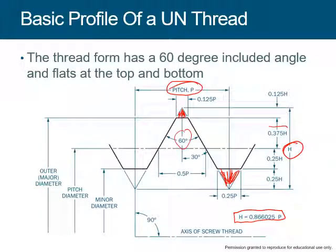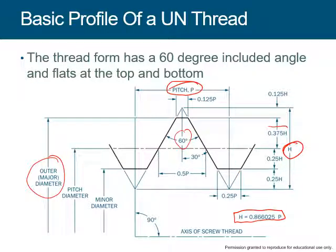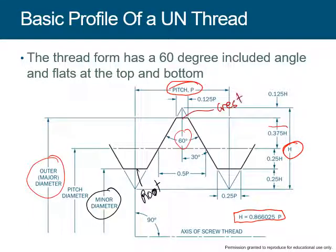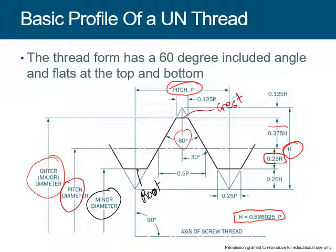Here is the minor diameter, which is the root, and here is the major diameter, which is the crest. The pitch diameter is the imaginary line, which is the average between both — or actually, it's located at a quarter of the height from the root.